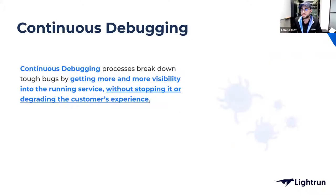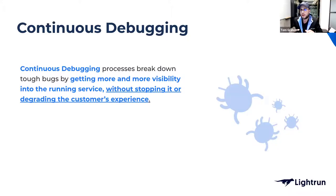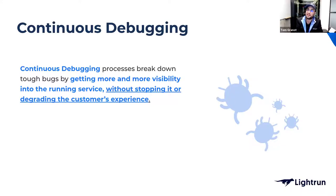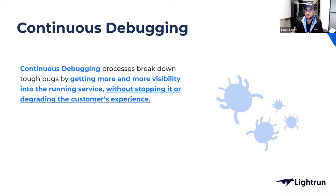Once we accept that we deserve a better process, a notion stems right on top of it: continuous debugging — understanding what's going on and getting more and more visibility into the running service without stopping or degrading the customer experience. Incidents are going to happen — that's a fact of life. Not everything requires 100% uptime. But it is our job to minimize the amount of time and pain our customers suffer.